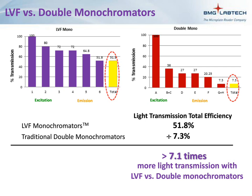In a double monochromator, the excitation grating system diffracts light causing a 64% loss in desired light, and then fiber optics lead to loss of an additional 25%. So only 27% of desired light reaches the sample. Reversing the whole series of steps for detection, the total efficiency of the double monochromator system is about 7%. This means that the LVF monochromator in the ClarioStar has about seven times more light transmission than the double monochromator.